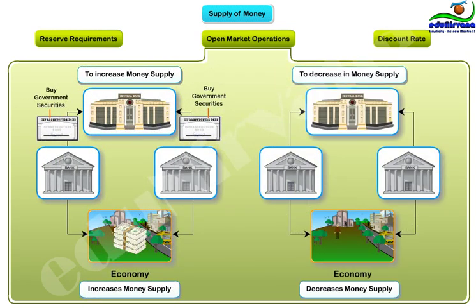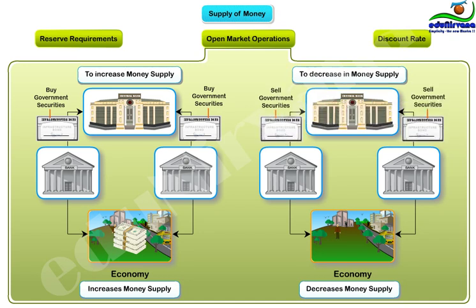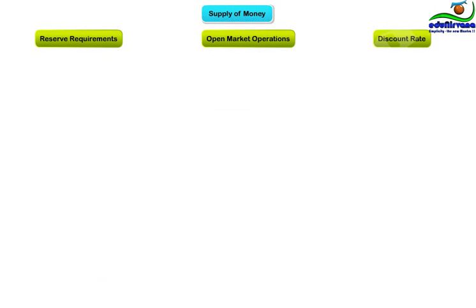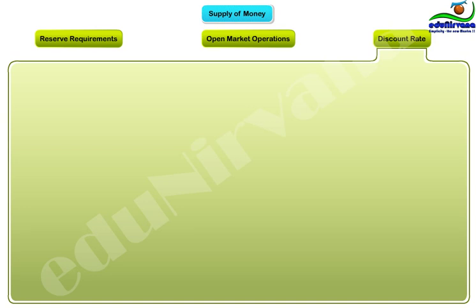To reduce the money supply, I do the opposite — I sell government securities. The financial system pays for these government securities with its holdings of currency and bank deposits, directly reducing the amount of money in circulation. In response, banks reduce the amount of lending and the process of money creation reverses itself.